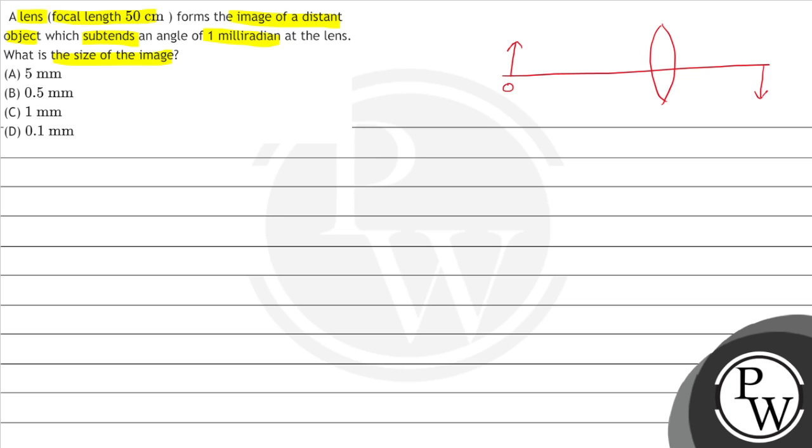Now we are making an angle for the image. This is the angle theta. This angle will also be made. This angle value is 1 milliradian.